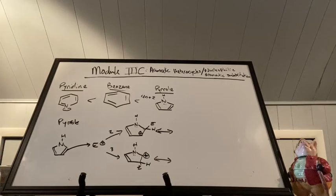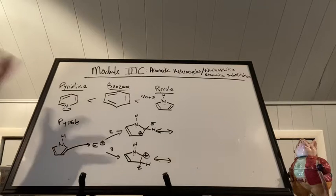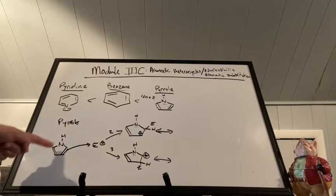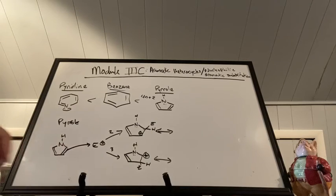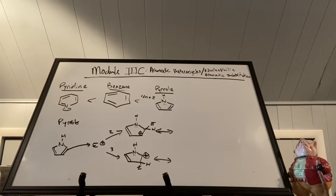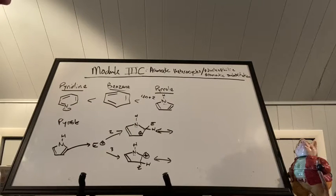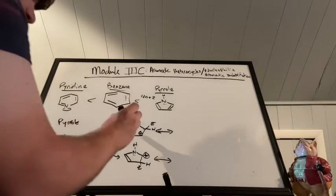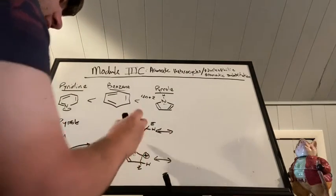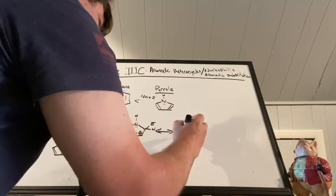For pyrrole, you can choose the two or three position - four and five are equivalent to those by symmetry, but we use the lowest locant numbers with respect to nitrogen. When a generic electrophile is added at the two position, the positive charge sits right there, and we can flip some electrons down so the positive charge is now adjacent to the nitrogen on the other end.